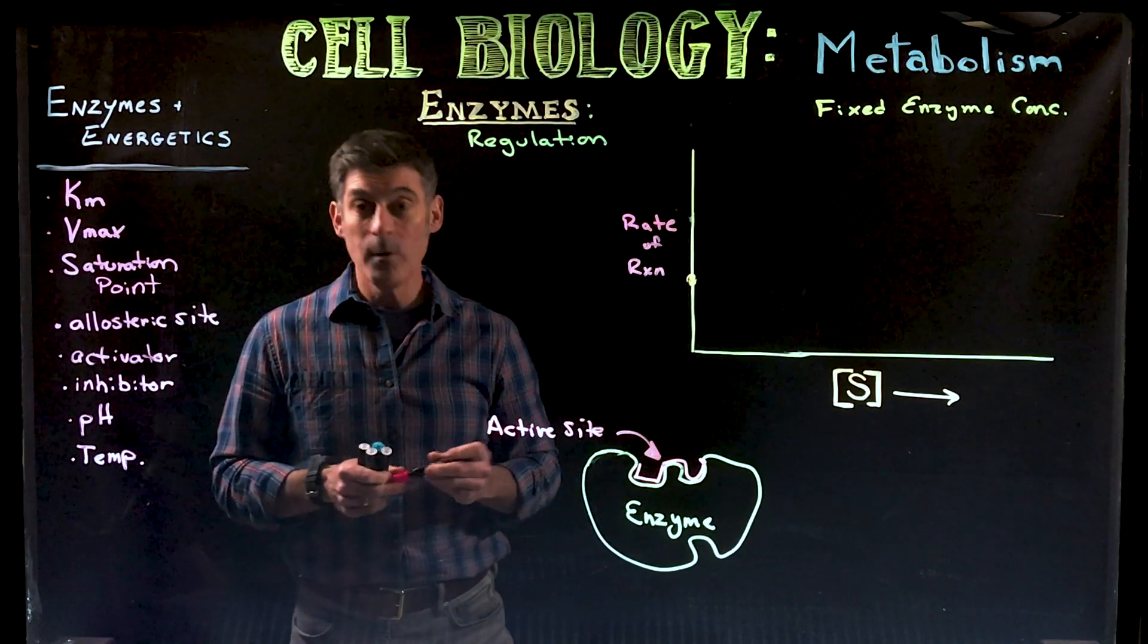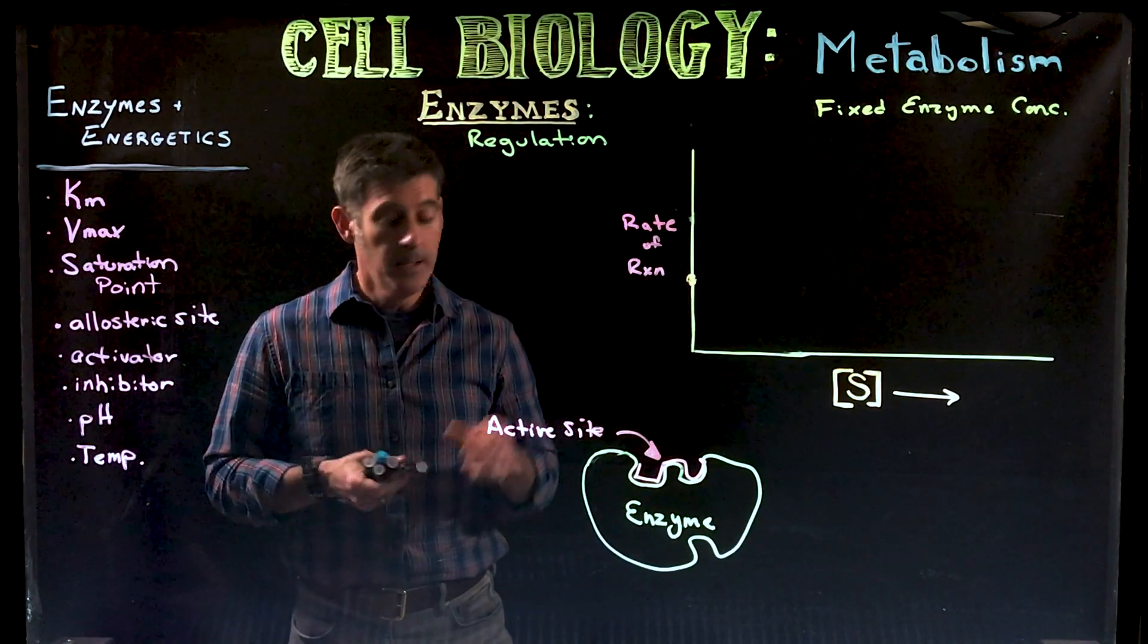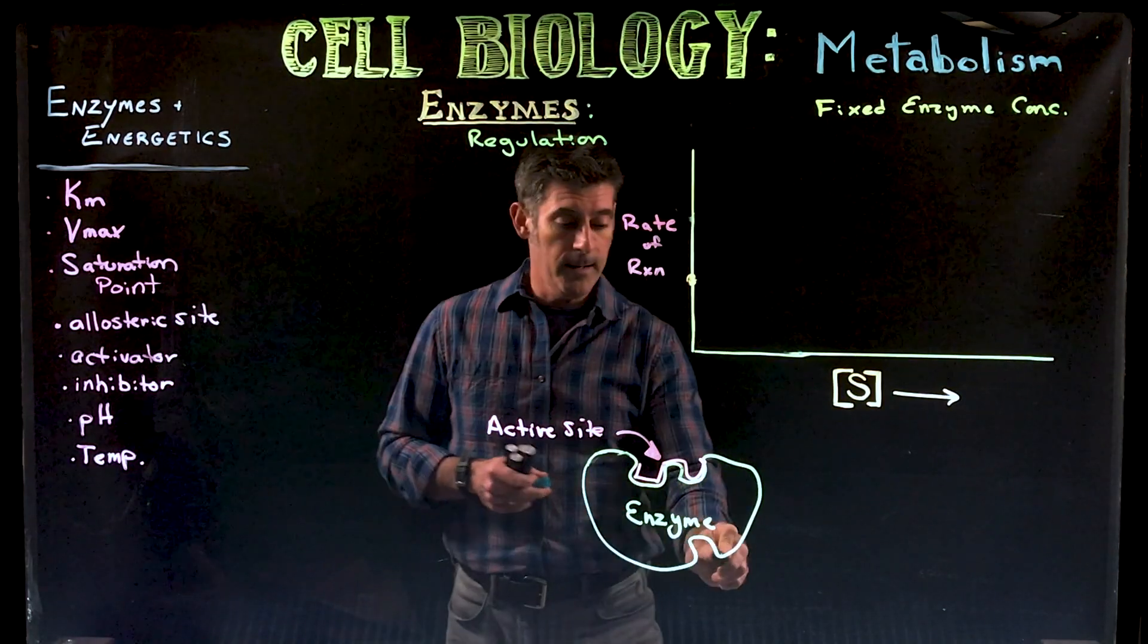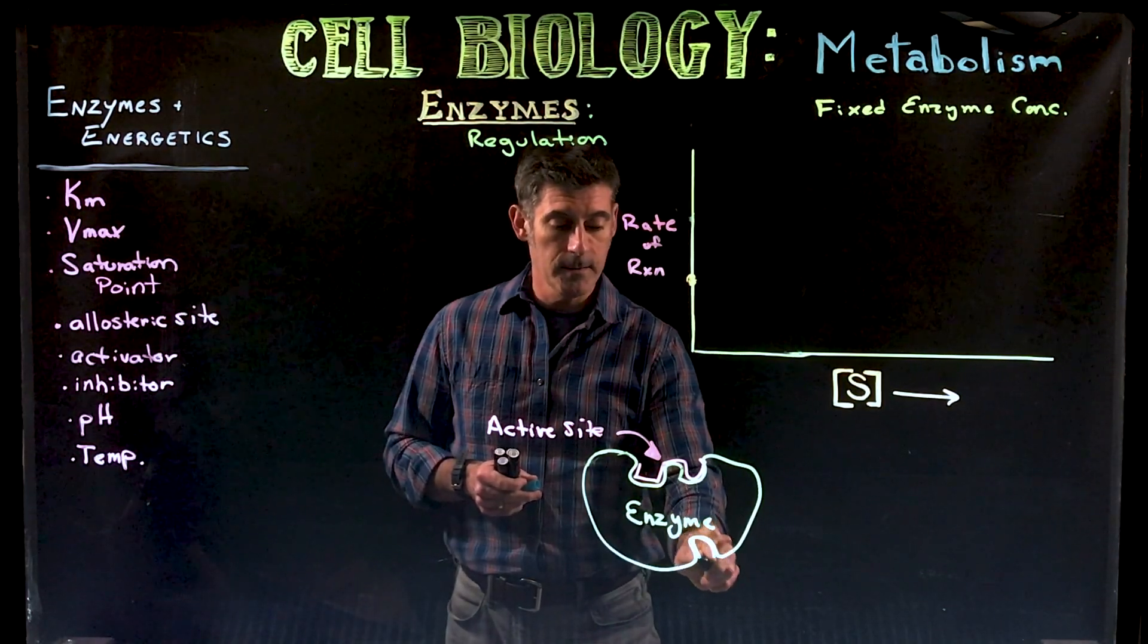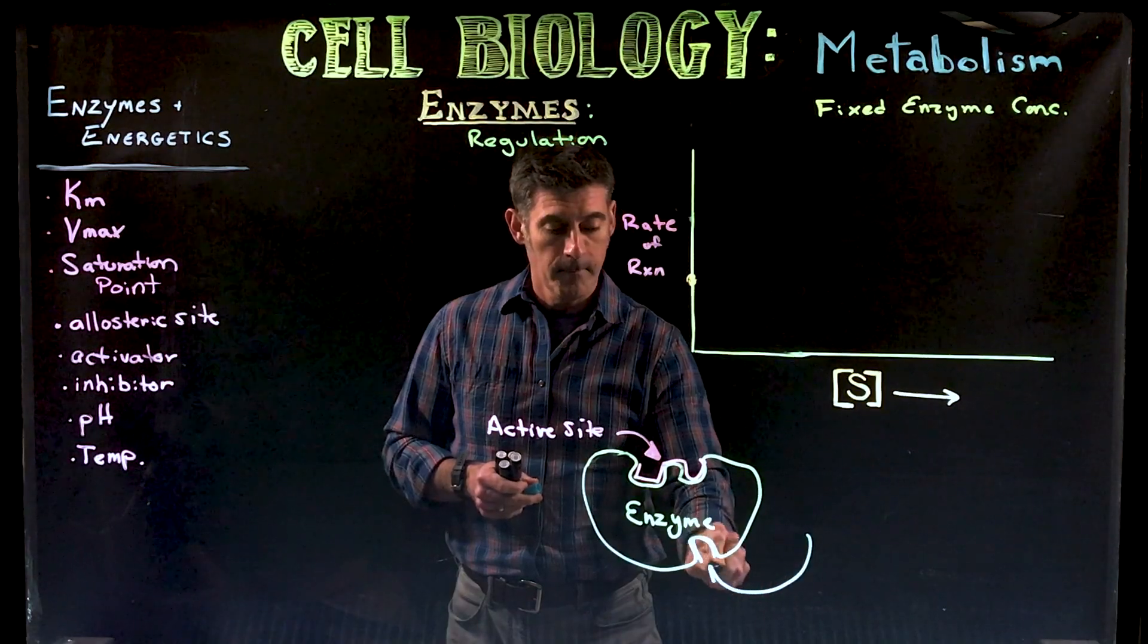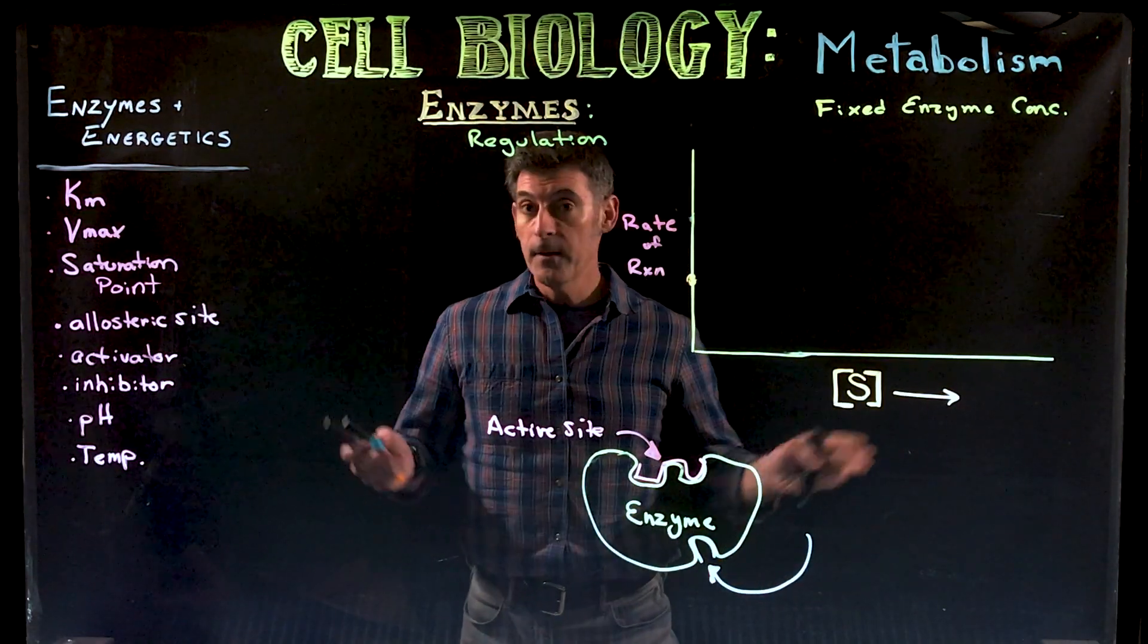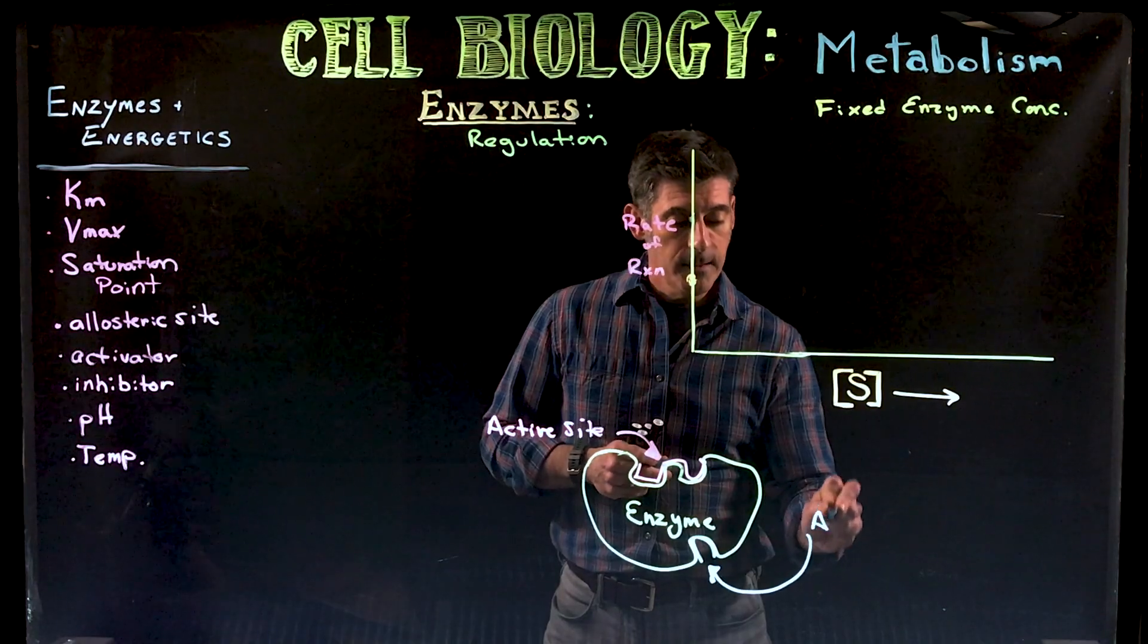So the active site is where the reaction is actually taking place. Now enzymes can also have additional binding sites in a different location. These are called allosteric sites.